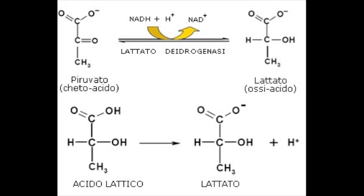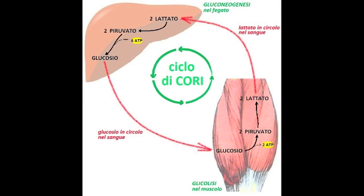Lactate goes into the bloodstream and reaches the liver, where it's transformed back into pyruvate, and through the reverse process of glycolysis, which is called gluconeogenesis. This process is much more expensive in terms of ATP — it takes six molecules of ATP to form glucose, unlike the two ATP molecules produced by glycolysis.